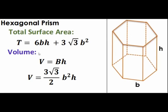For the volume, again it's area of the base times height. Being a hexagon, the area of the base is 3 times square root of 3 all over 2 times B squared, with the height denoted by H. Therefore, the volume of this hexagonal prism is equal to 3 times square root of 3 over 2 times B squared H.